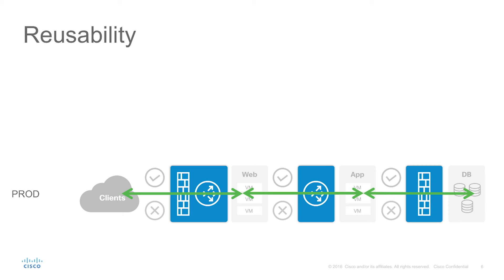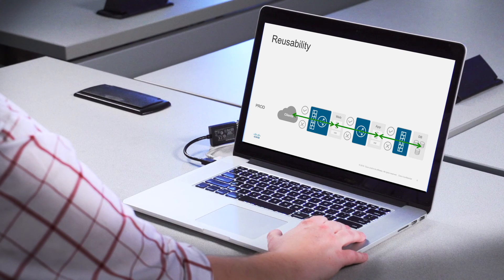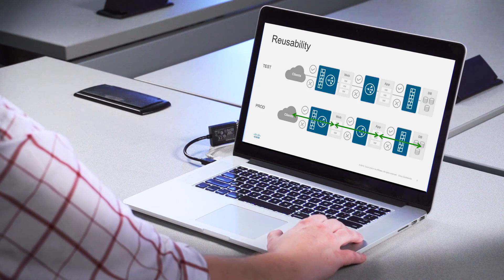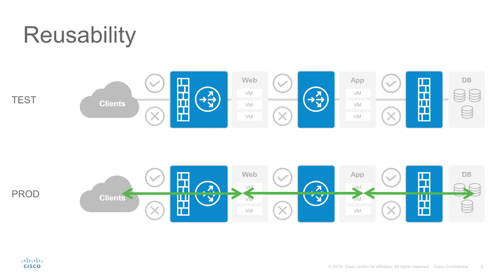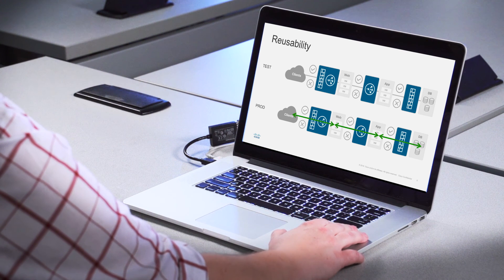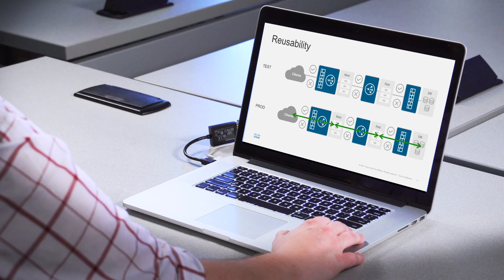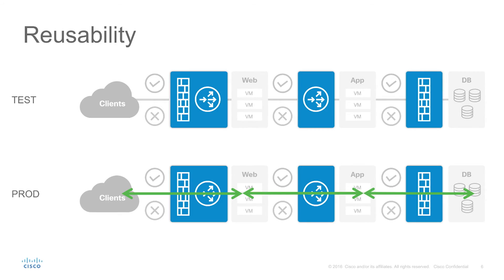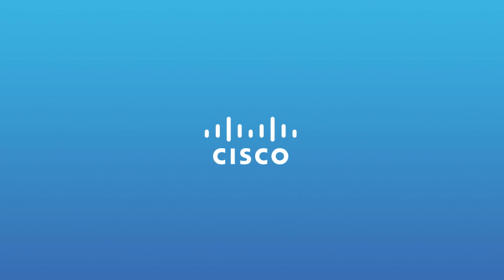Not only are we able to make these application-centric profiles, we can reuse any part of them we want. We can literally copy and paste our production application profile to a test application profile so they're exactly the same when testing a new version of an application. We can also reuse things like firewall service graphs or contracts, and copy these to different tenants — for example, when setting up common services for the sales tenant and the marketing tenant. Thanks so much for watching.